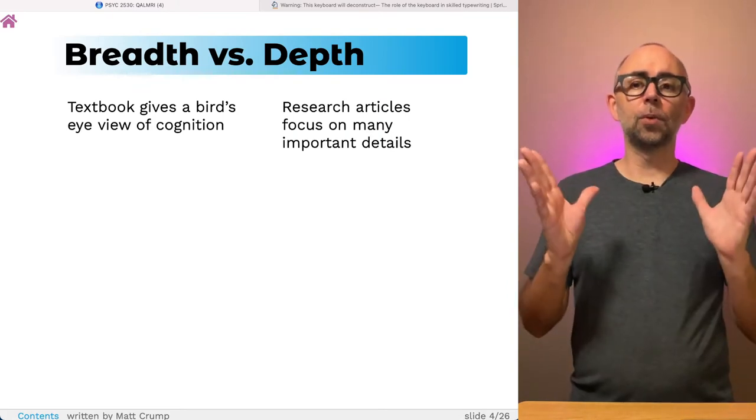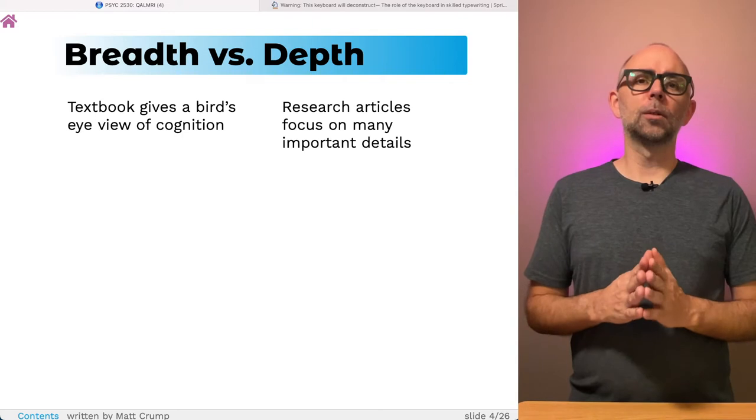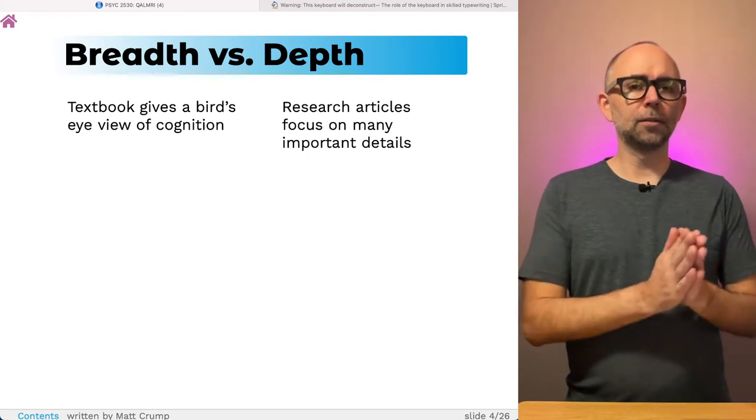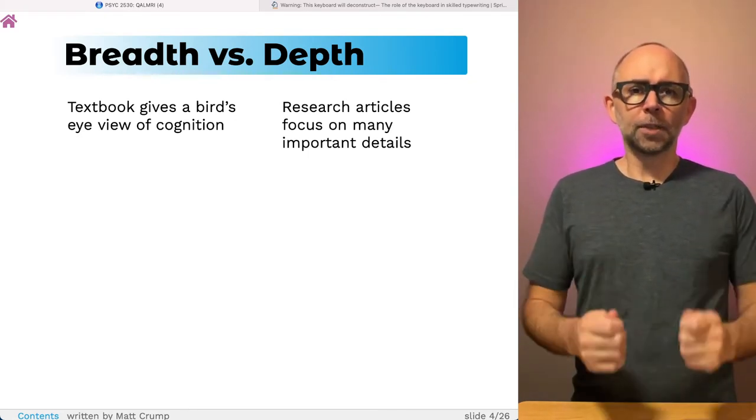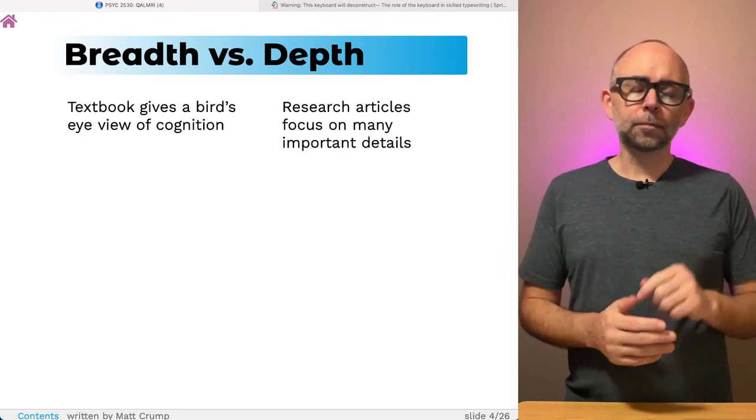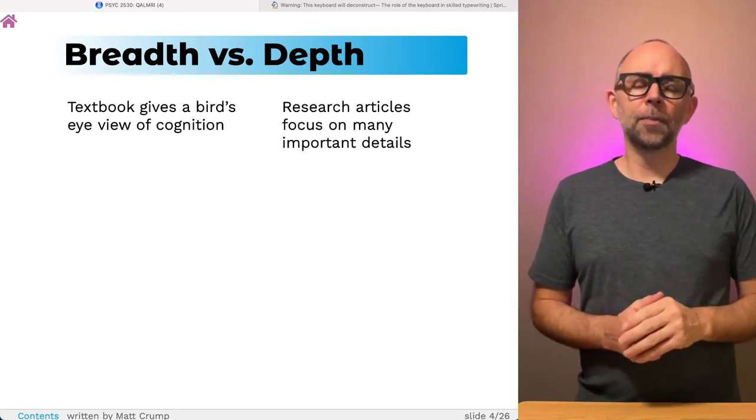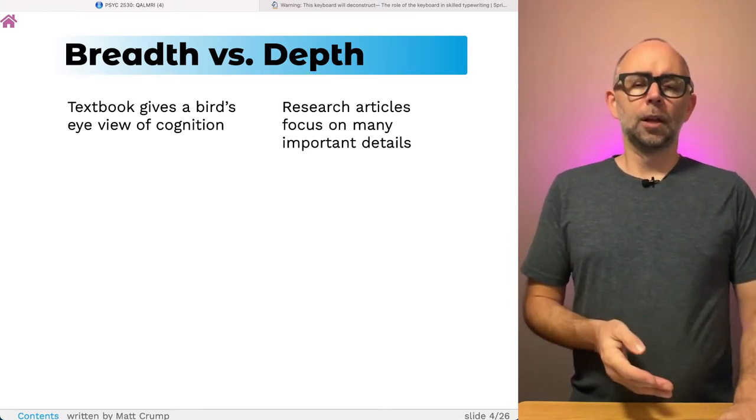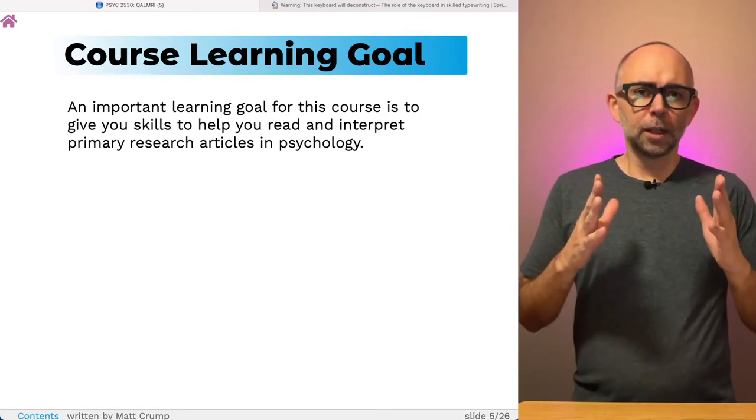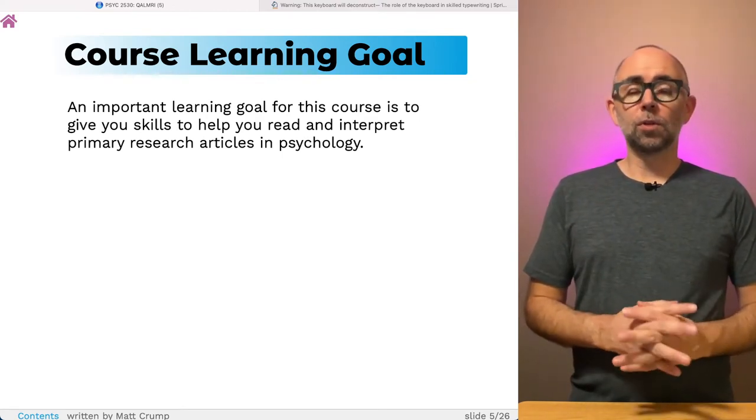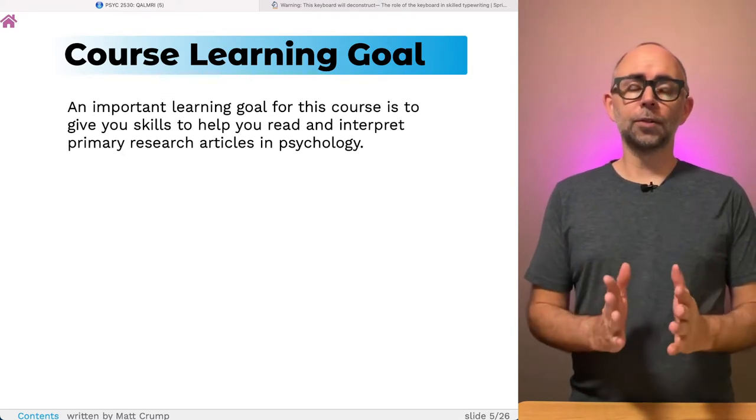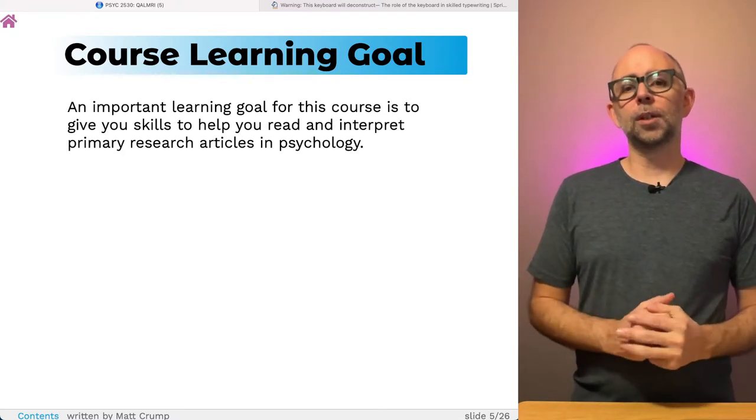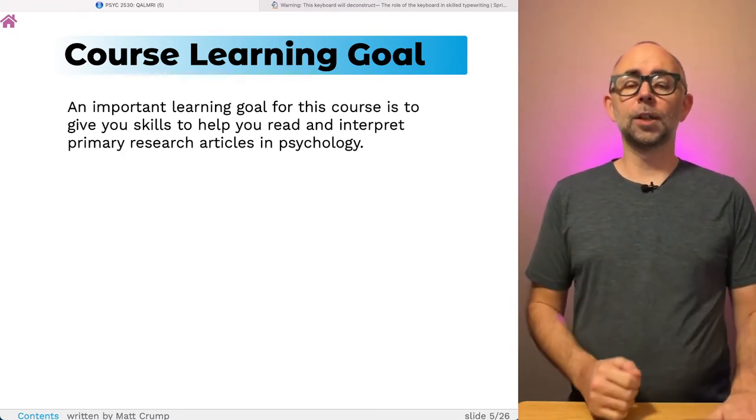As a general point, the textbook in this course will give you a bird's-eye view about various domains in cognition, but it will sacrifice a little bit of depth. So sometimes in the course, we will find opportunities to go into the details by reading individual articles published in cognitive journals. Now, reading primary research articles is a general course goal I have for all students, and this is a first step towards helping you develop skills to read and interpret these kinds of things.